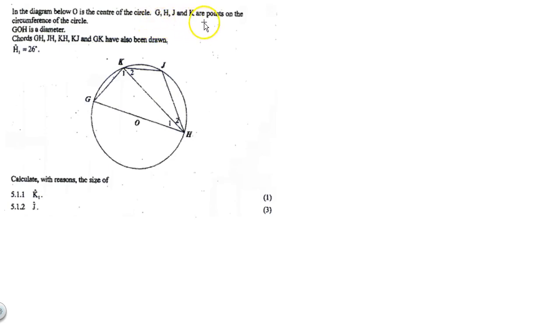G, H, J, and K are points on the circumference of the circle. G, O, H is a diameter.